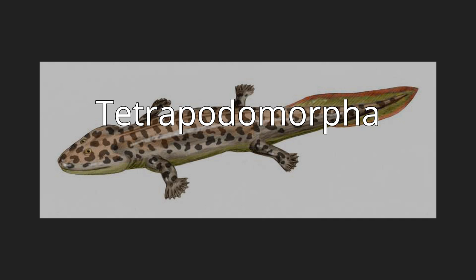The Tetrapodomorpha, also known as Choanata, are a clade of vertebrates consisting of tetrapods — four-limbed vertebrates — and their closest sarcopterygian relatives that are more closely related to living tetrapods than to lungfishes.